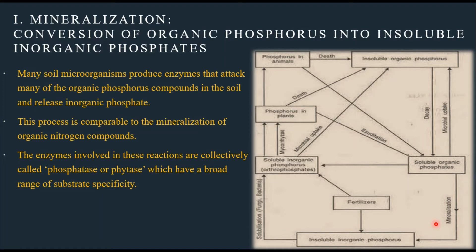In mineralization, soluble organic phosphorus present in decomposable organic matter is converted into insoluble inorganic phosphorus. This occurs mainly by soil microorganisms that produce enzymes which attack many organic phosphorus compounds and release inorganic phosphate. This process is analogous to the mineralization of organic nitrogen compounds. The enzymes involved are mainly phosphatase or phytase, which have a broad range of substrate specificity.